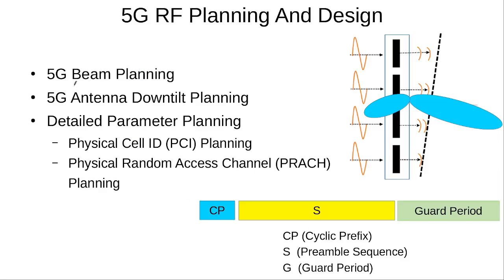After that, we will discuss how beam planning and antenna downtilt planning are done in 5G. Then we will go to the detailed parameter planning, covering how physical cell IDs are planned in a 5G network and how the physical random access channels used in different cells are planned.